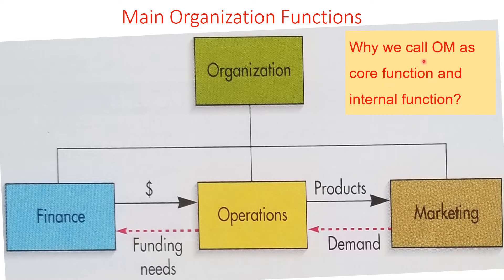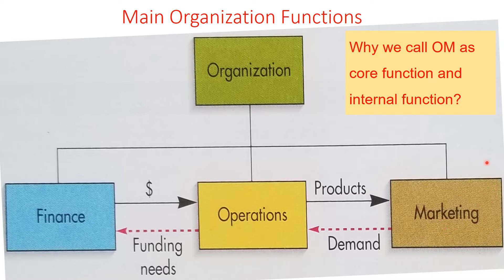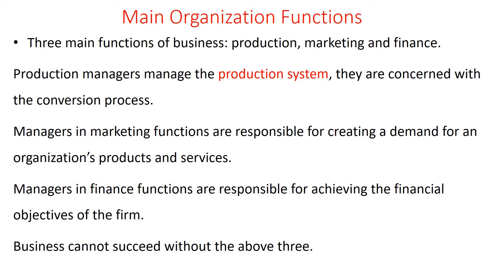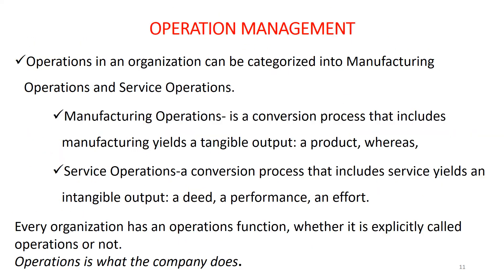So why do we call operation management a core function and an internal function? It is a core function because it is among the main functions and it is the process of producing the main products or services of the organization. We call it an internal function because there is no direct contact with the external environment — it contacts the external environment indirectly through finance to get resources and through marketing to provide products to customers.